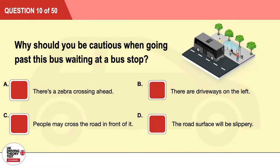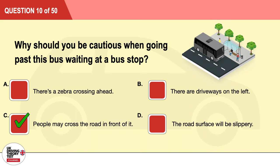Question 10: Why should you be cautious when going past this bus waiting at a bus stop? A: There's a zebra crossing ahead. B: There are driveways on the left. C: People may cross the road in front of it. D: The road surface will be slippery. The correct answer is C: people may cross the road in front of it.